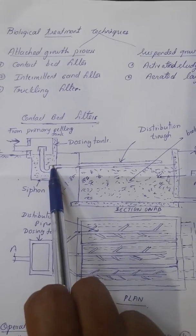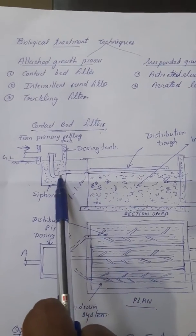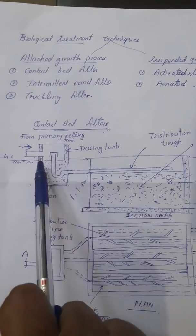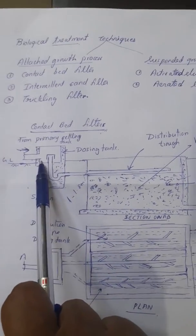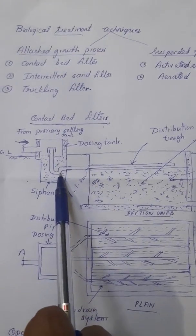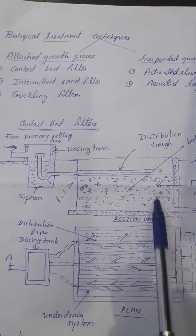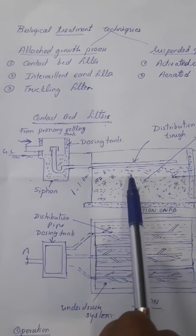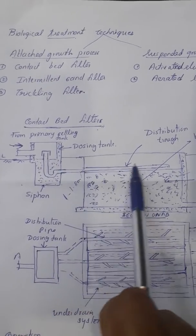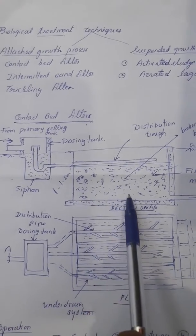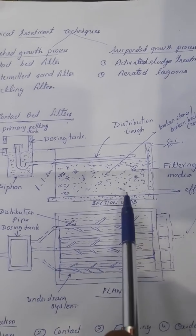A siphoning dosing tank is provided to serve 2 or 3 contact beds. The effluent from the primary settling tank is first received by this dosing tank and then distributed over one contact bed at a time. The effluent after passing over this coarse filter media is collected at the bottom and conveyed to the under drain system.